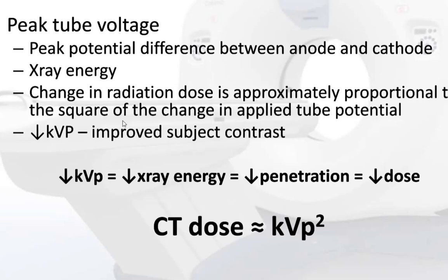KVP is peak tube voltage — the peak potential difference between anode and cathode. It is a measurement of X-ray energy. Change in radiation dose is approximately proportional to the square of the change in applied tube potential. When we decrease KVP, we improve subject contrast, decrease X-ray energy, decrease penetration, and therefore decrease the dose. There is no linear relationship between KVP and CT dose.